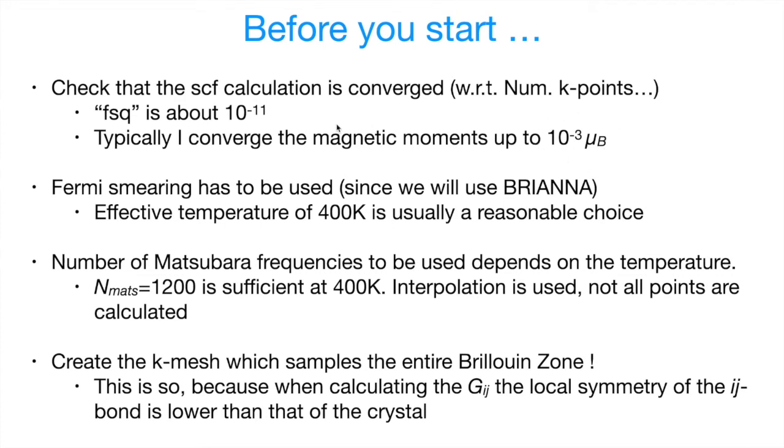We will also have to use Fermi smearing. And it is so because we are using DMFT machinery. And we will calculate the exchange integrals by doing integrations on Matsubara axis. Therefore, we have to set some effective temperature. And a good choice here is 400 Kelvin, which corresponds to 2.5 milli-Rydberg.